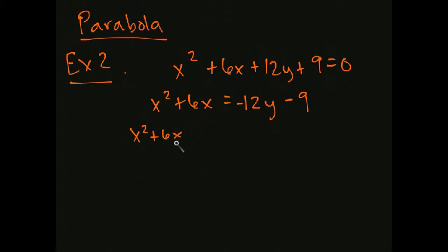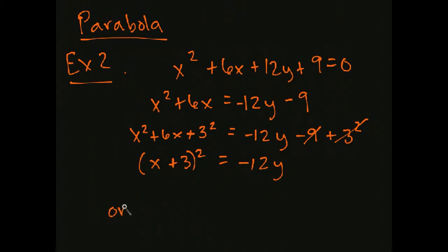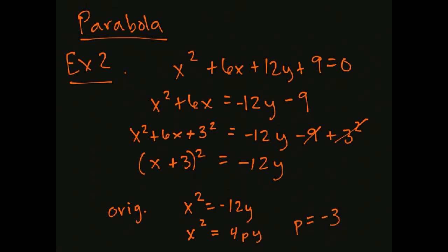Completing the square: x squared plus 6x — since 6 equals 2 times 3, we need 3 squared = 9. We add 9 to both sides. So x squared plus 6x becomes (x + 3) squared, and the plus 9 and minus 9 cancel on the right. What we have is the shifted equation (x + 3) squared equals −12y. The original would have been x squared equals −12y, a parabola with p equals −3, and now we've just shifted it 3 units to the left.